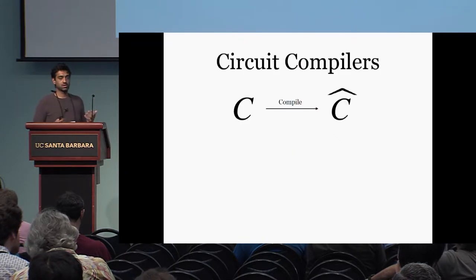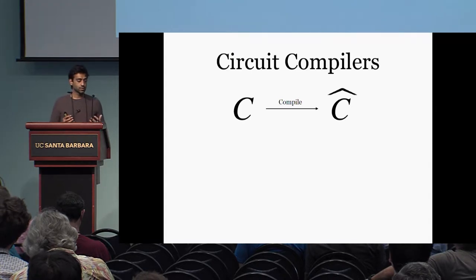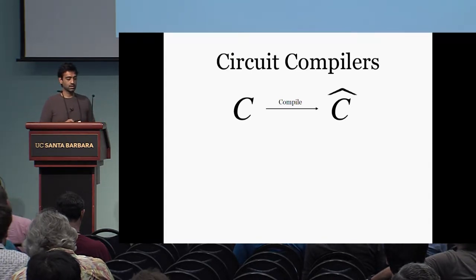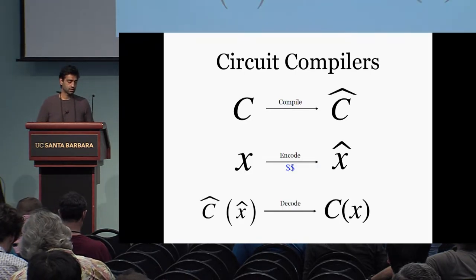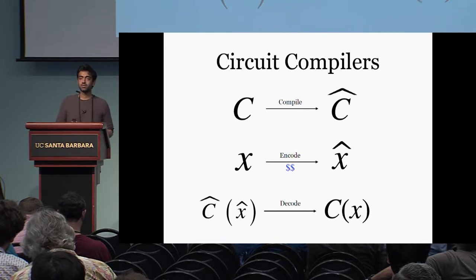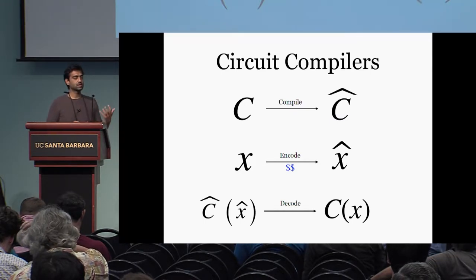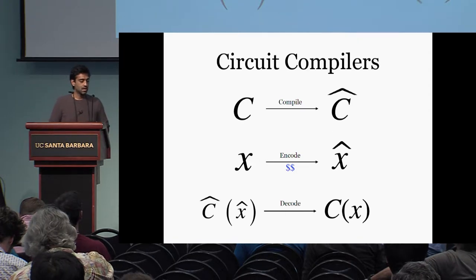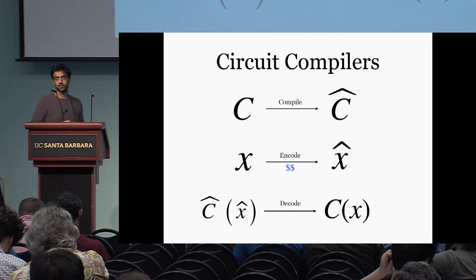So let me explain what circuit compilers are. Circuit compilers allow you to compile a circuit C into a compiled circuit C-hat. This is accompanied with the corresponding encoding and decoding algorithms. The encoding algorithm allows you to encode an input X into an encoded input X-hat. The computation of C-hat on X-hat essentially emulates the computation of C on X. And to recover C of X from C-hat of X-hat, we use the decode algorithm.